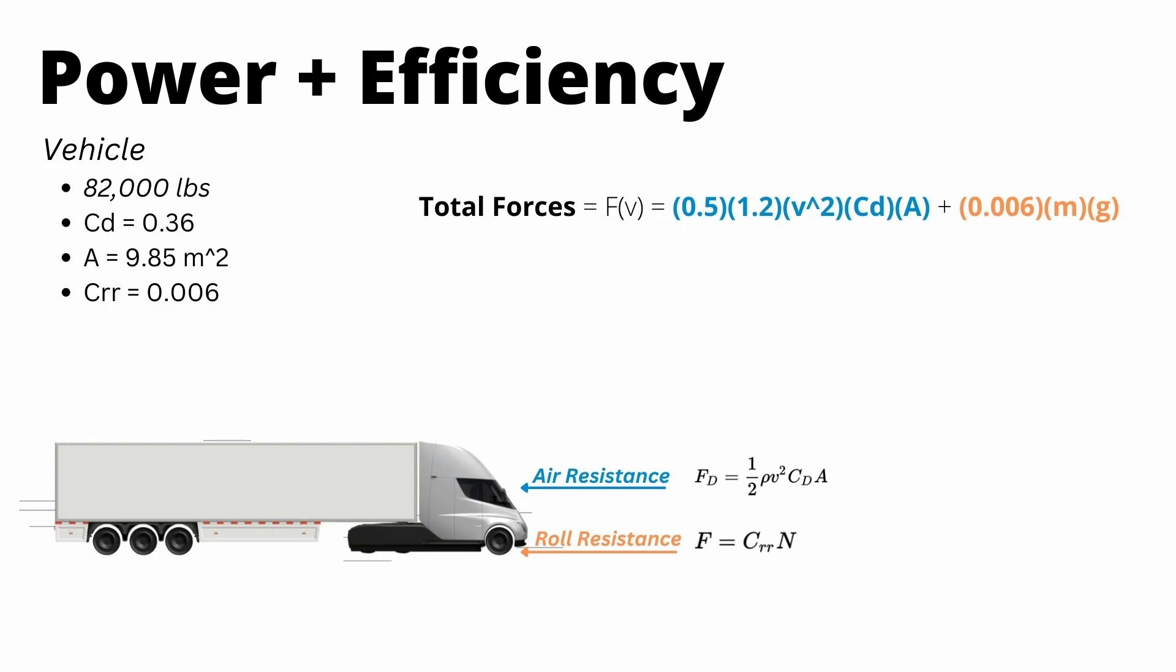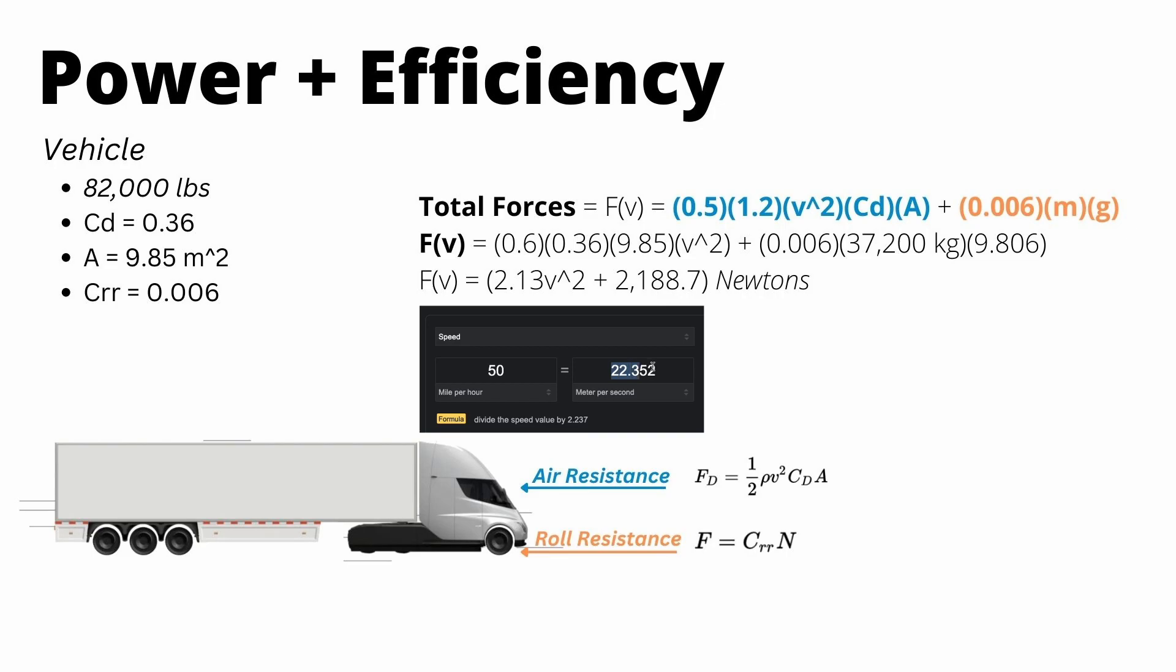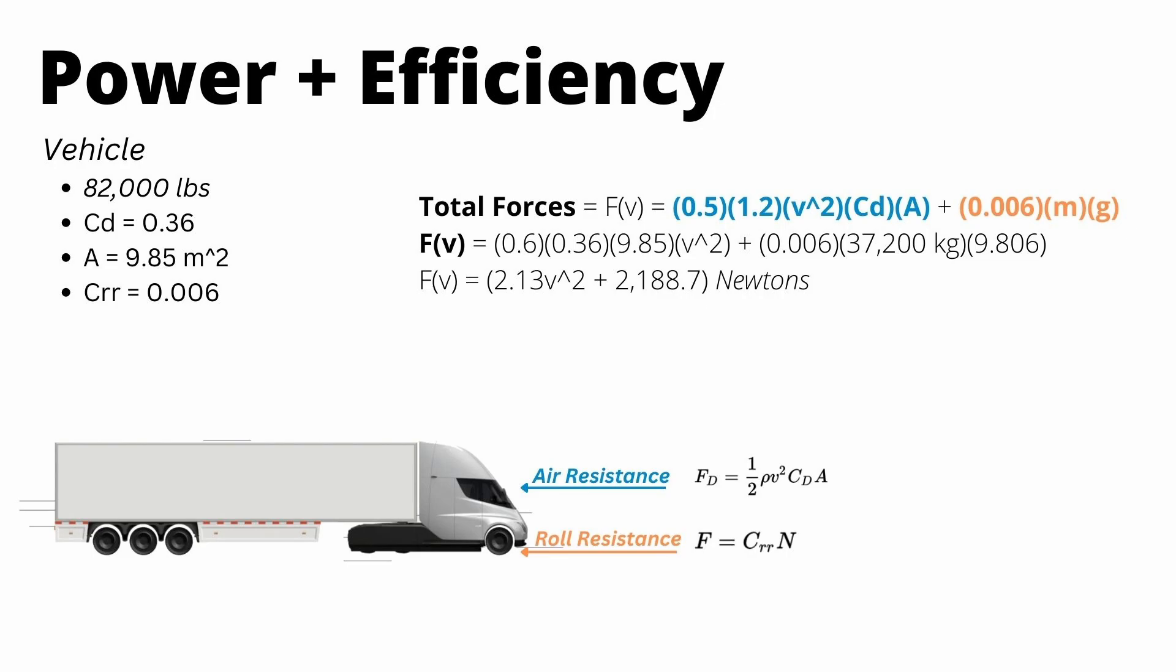When you plug in all of our parameters into the forces equation, you see that force at any velocity is equal to 2.13 v squared plus 2,188.7, and that's all going to be in newtons because it's a force. So we could plug in any velocity into this equation, like 50 miles an hour, and that would tell us the actual forces that are acting on the truck to slow it down.